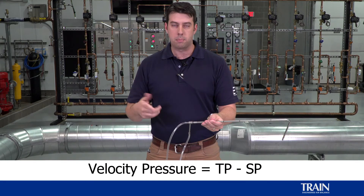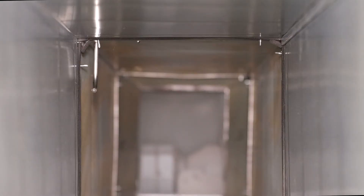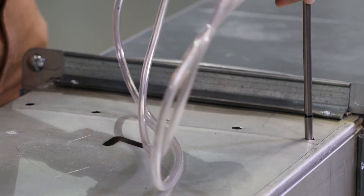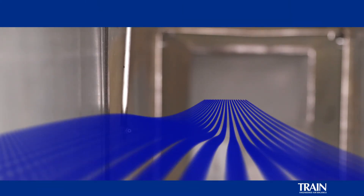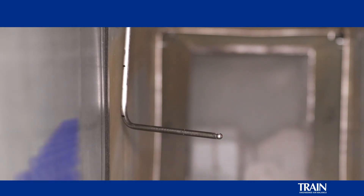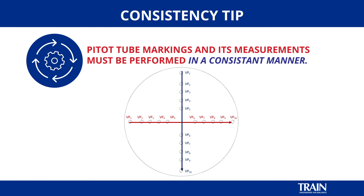The velocity pressure is the total pressure minus the static pressure. We can visually demonstrate the location of the pitot tube inside a duct when performing a pitot tube traverse. The pitot tube must be oriented into the airstream and perpendicular to the airstream in a cross-sectional plane. We do not want to see the pitot tube at an incorrect angle, since that will produce erroneous readings and provide unacceptable data. It is also important that the pitot tube be gridded off and measurements taken in a consistent manner.